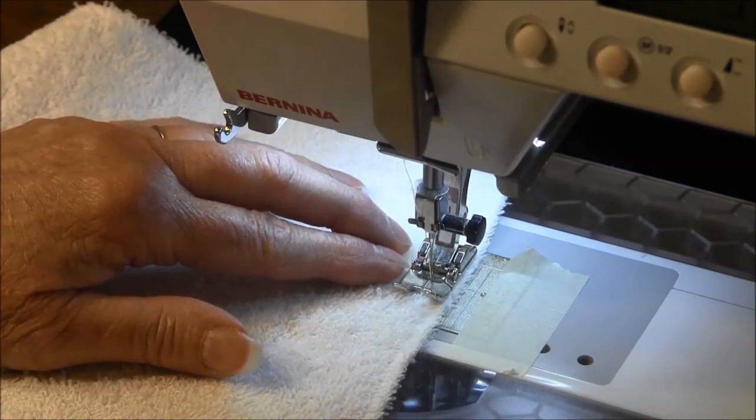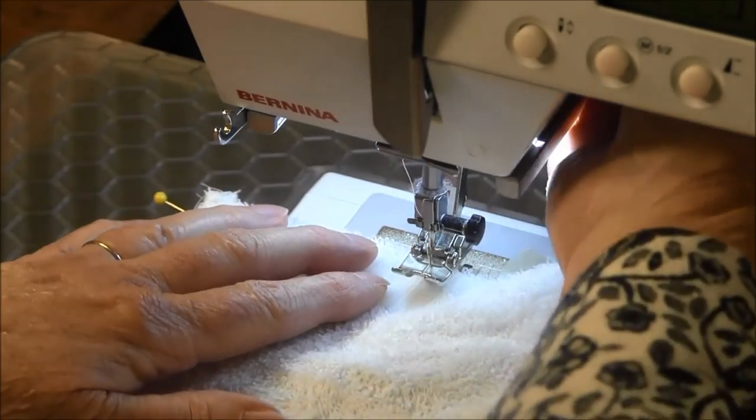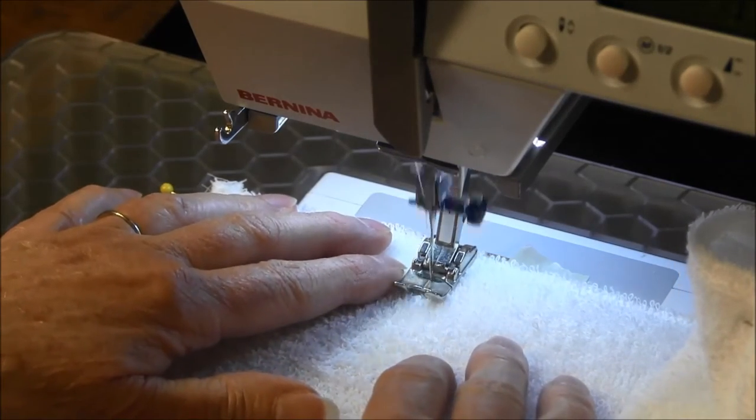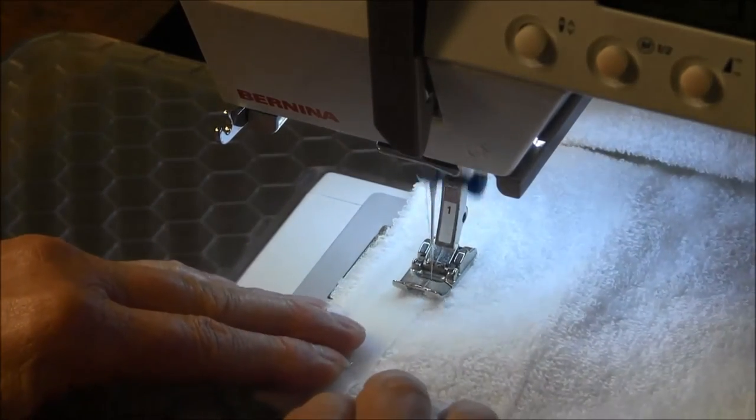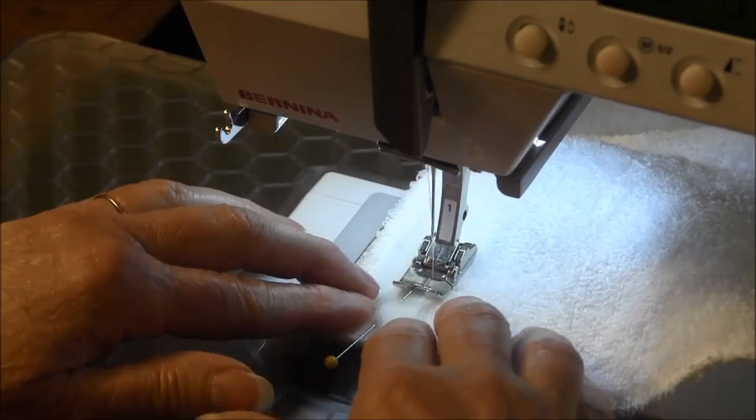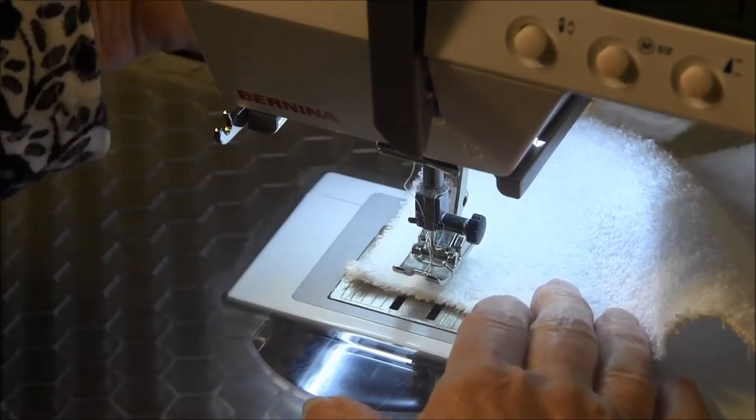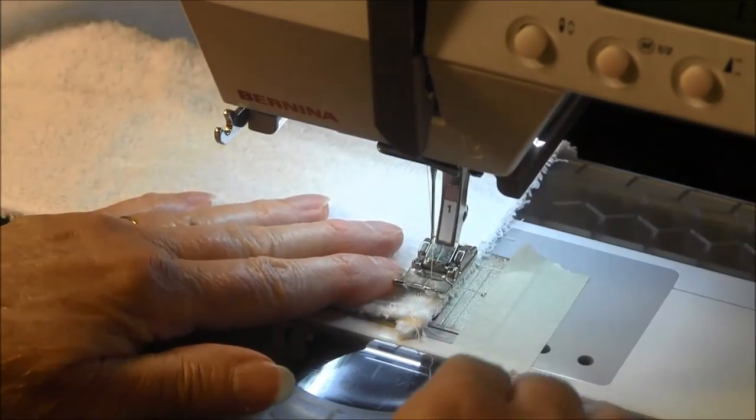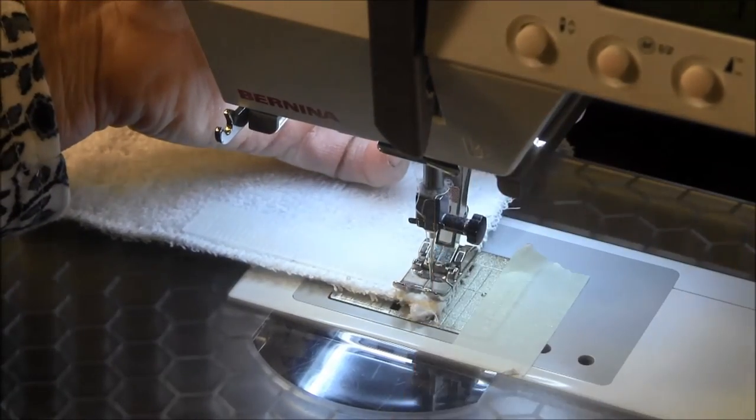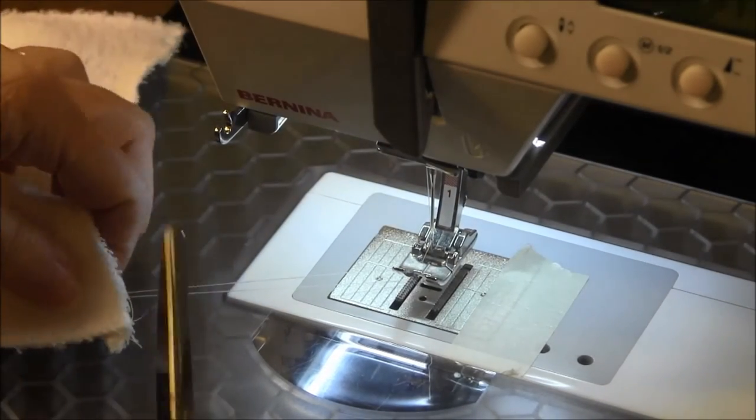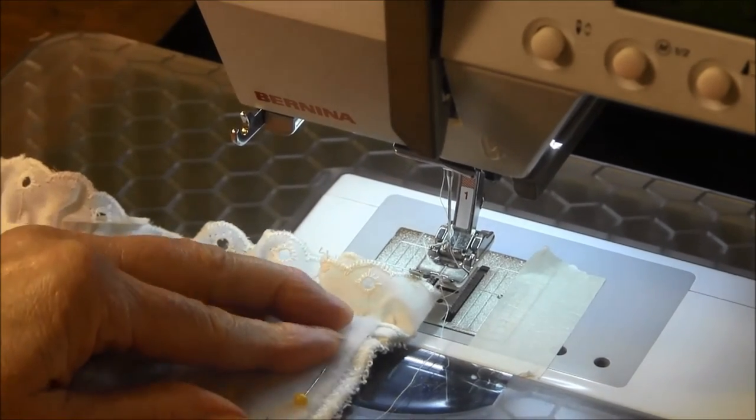And now we're going to stitch these pieces in place using a straight stitch. If your machine has the needle down feature, you can use that. Otherwise, have your needle down when you turn it. Turn and stitch. I'm going to stitch the other side and then I'll be back to show you the finished product.